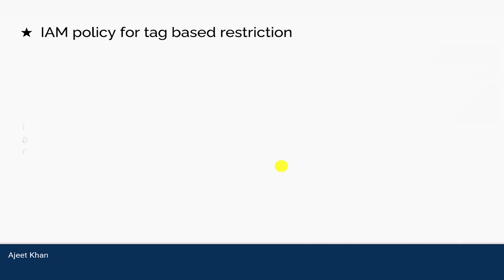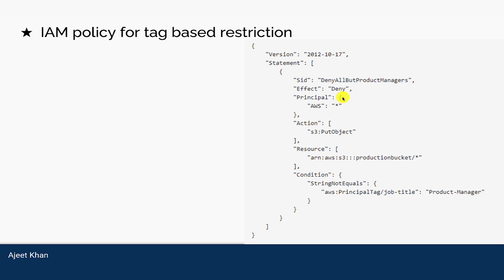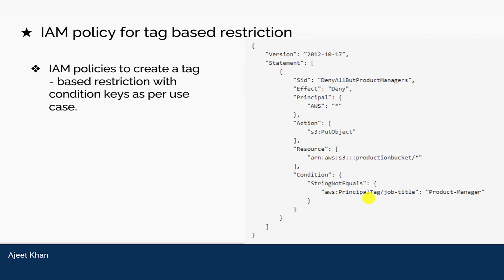Next is having an IAM policy based on tags. You can have tag-based restrictions as well. When you create AWS resources you can tag them — a tag is a key-value pair you give to any AWS resource at creation or even afterwards. In this example policy we are denying all but product managers. The effect is deny, the action is S3 PutObject, and the resource is everything inside a specific production bucket. The condition is StringNotEquals on the principal tag job title 'product manager', so this policy denies everyone except product managers from performing PutObject on that S3 bucket.